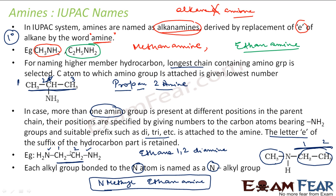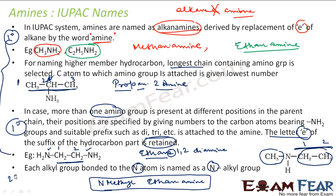If you have more than one amine group, choose the longest chain — here it's ethane — and the letter E is retained: ethane-1,2-diamine. For second and third degree amines, you use the prefix N-alkyl. So if instead of a hydrogen you have a methyl attached to the nitrogen, you say N-methyl, and the normal chain name follows — for example, N-methylethanamine.